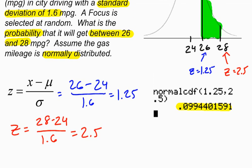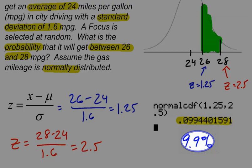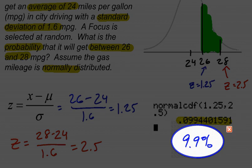So if this was a word problem, and it is, I would want to write my answer as a complete sentence. So instead of saying what is the probability, I'm just going to say the probability that the car will get between 26 and 28 miles per gallon is about 9.9%. I just like to write my probabilities as percents. You could leave it in decimal form, but either way is acceptable. Hope this helps, and have fun in your stats class.